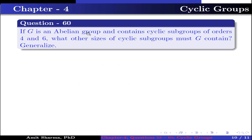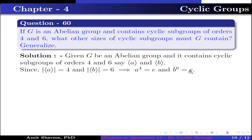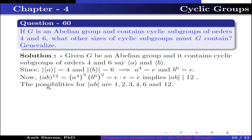Question number 60. If G is an abelian group and contains cyclic subgroups of order 4 and 6, what other sizes of cyclic subgroups must G contain? Given G is an abelian group containing cyclic subgroups of order 4 and 6, say the subgroup generated by A and the subgroup generated by B. Since the subgroup generated by A has order 4 and the subgroup generated by B has order 6, this implies A⁴ = identity and B⁶ = identity. Now (AB)¹² = (A⁴)³·(B⁶)² = identity, so the order of AB divides 12. The possibilities for the order of AB are 1, 2, 3, 4, 6, and 12.